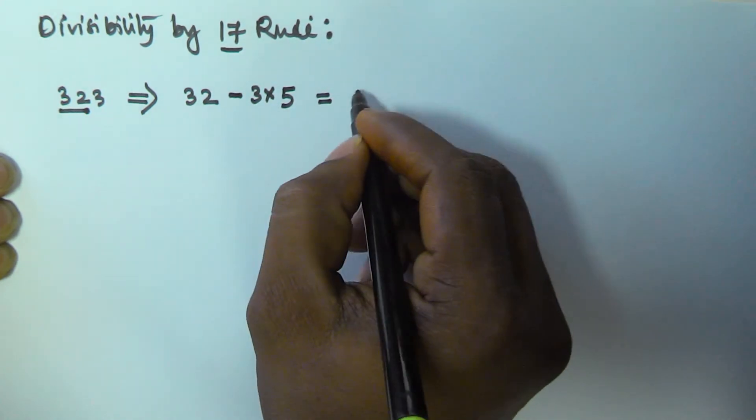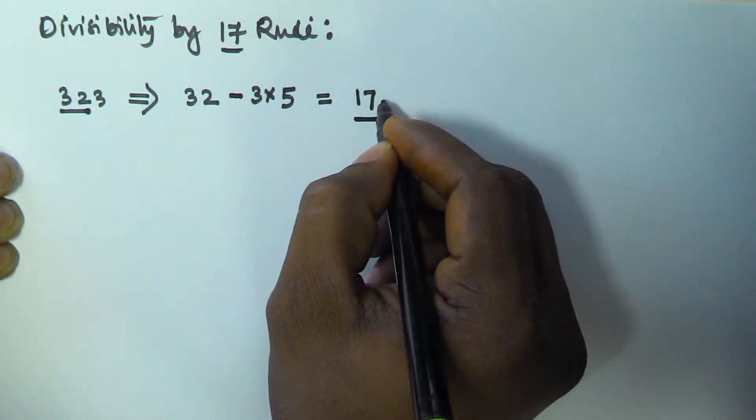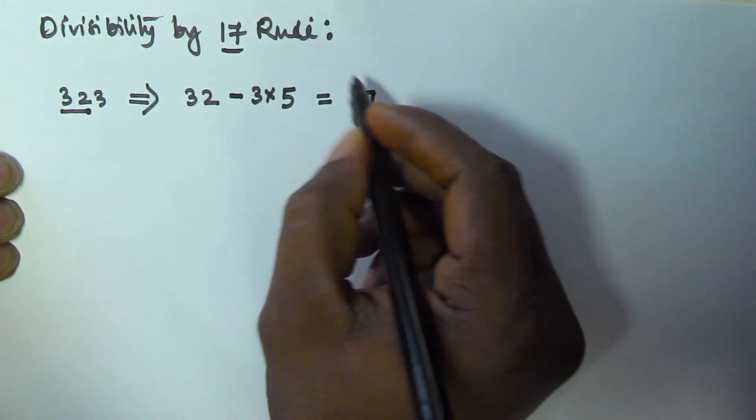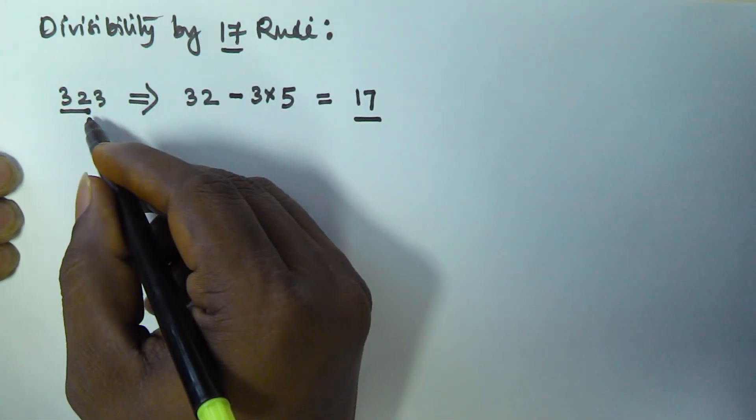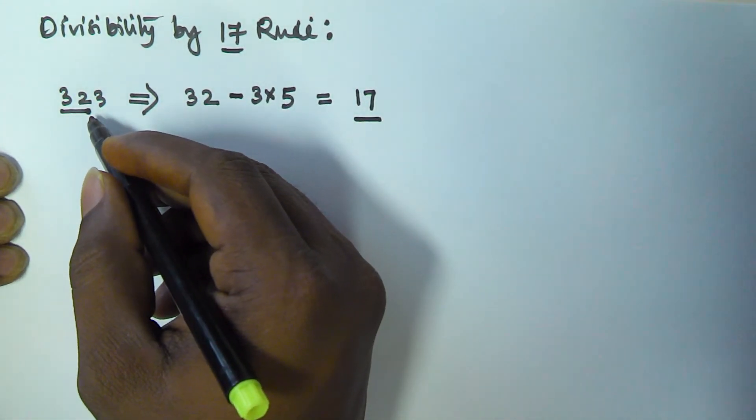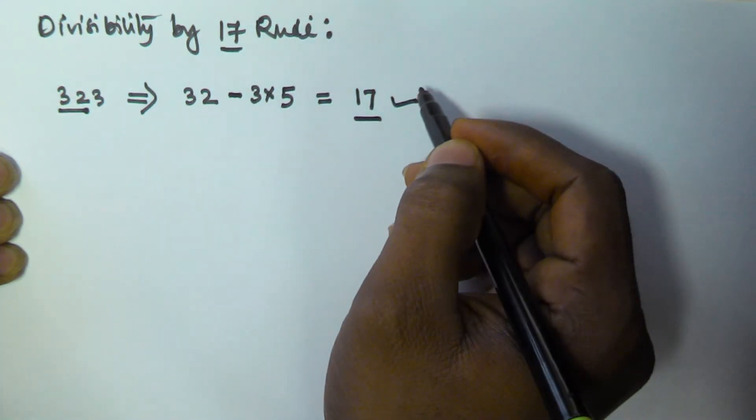So that means 17 is divisible by 17, which means 323 is divisible by 17.